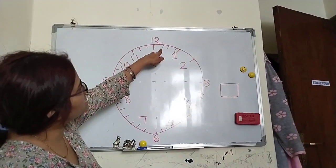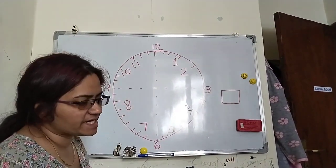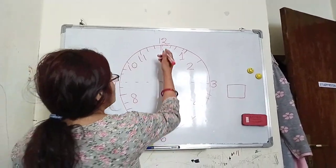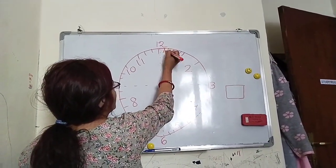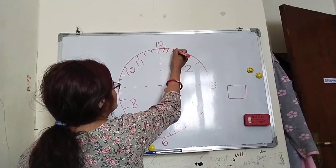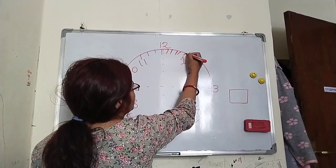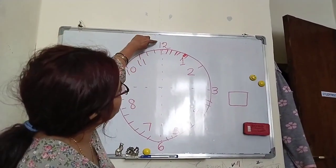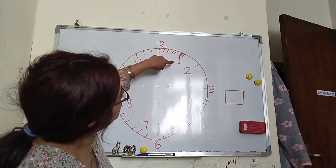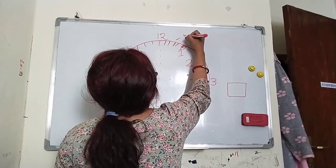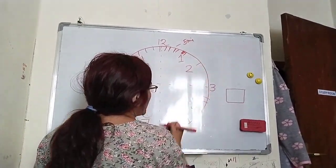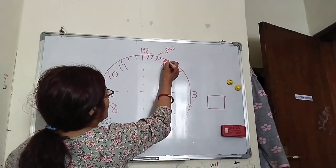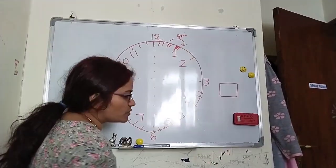So, how many small lines did I draw? What is the meaning? I have to write 5. How? After 12: 1, 2, 3, 4, 5 — that's 5 lines like this. That means after 12 to 1 is 5 minutes. So when our long hand is on 1, that means 5 minutes have passed.